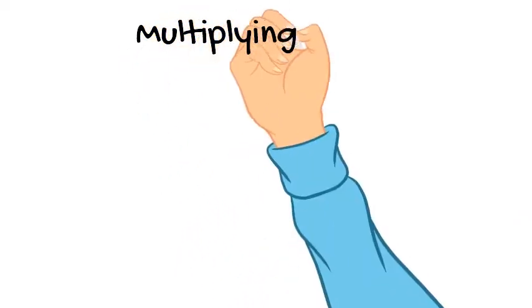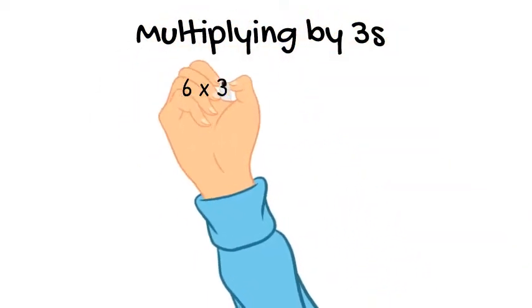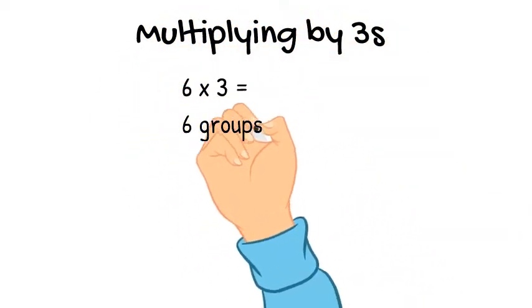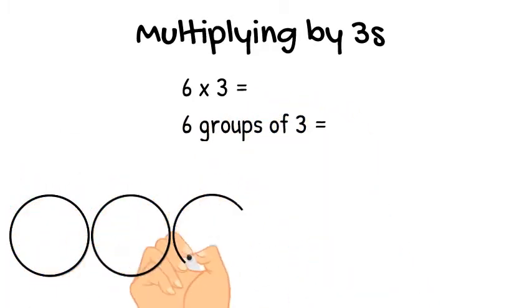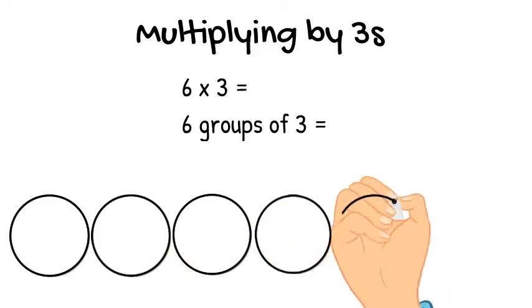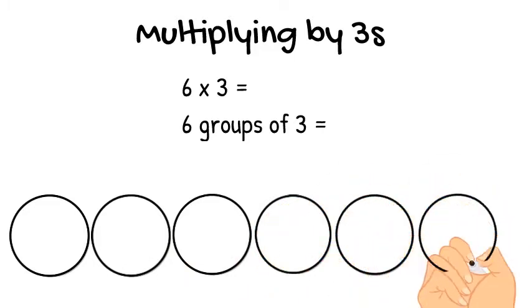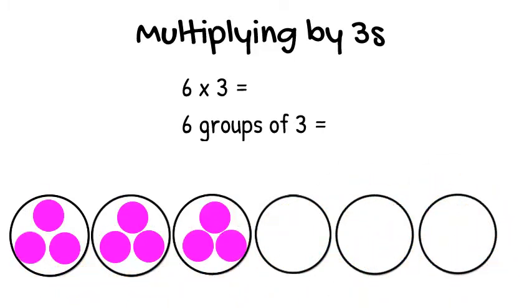Let's try multiplying by threes. We'll try doing six times three, or six groups of three. That means we need to draw six groups, so I'll draw six circles underneath. Inside each circle, we need to draw three smaller circles.